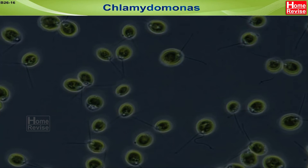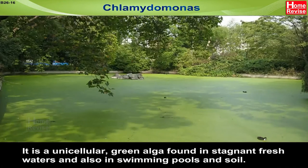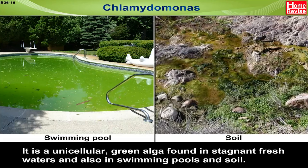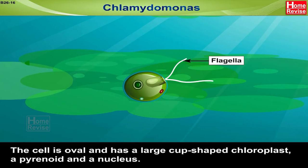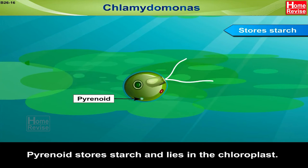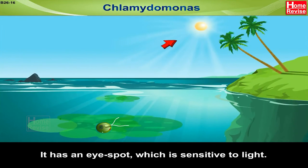Chlamydomonas is a unicellular green alga found in stagnant fresh waters and also in swimming pools and soil. It has two flagella at the narrow anterior end which help in swimming. The cell is oval and has a large cup-shaped chloroplast, a pyrenoid and a nucleus. Pyrenoid stores starch and lies in the chloroplast. It has an eye spot which is sensitive to light.